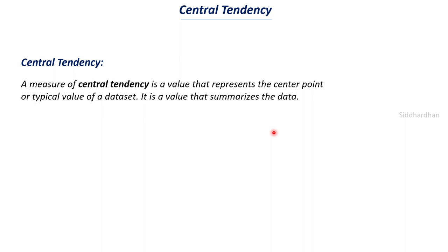A relatable example is GPA. During academics in college, we write many exams across many subjects and get a grade for each. GPA is one value that summarizes the entire academic performance of a student — it is a measure of central tendency, specifically a form of mean value. It is one value representing the entire data, which in this case is the academic performance of a student.